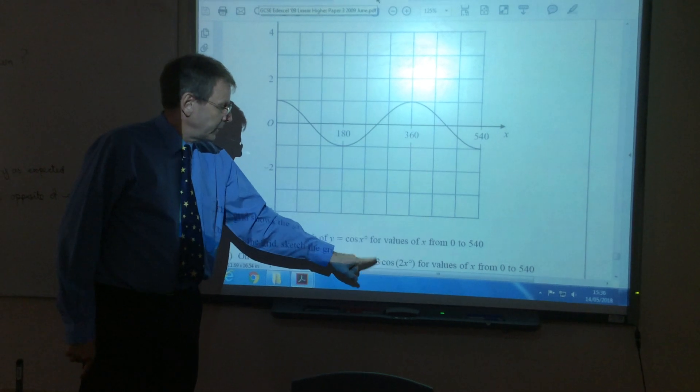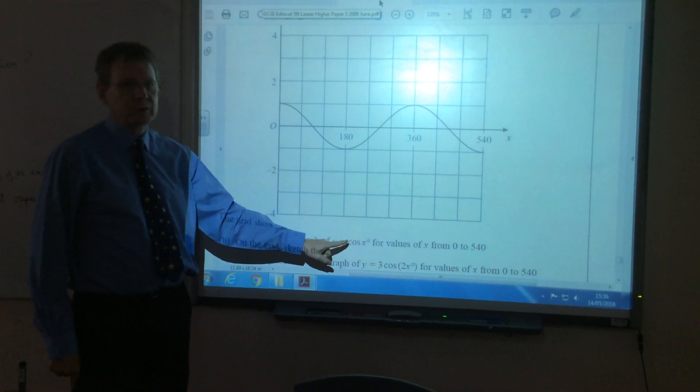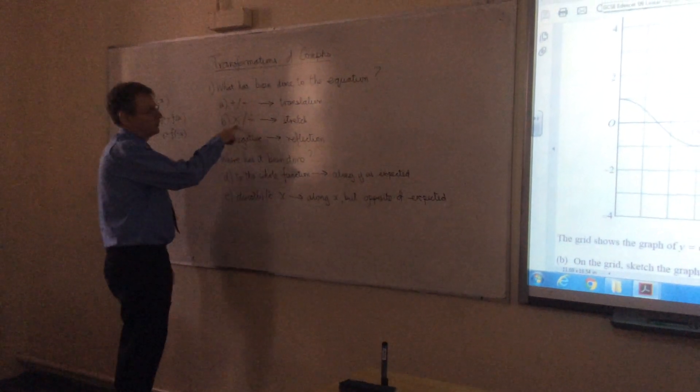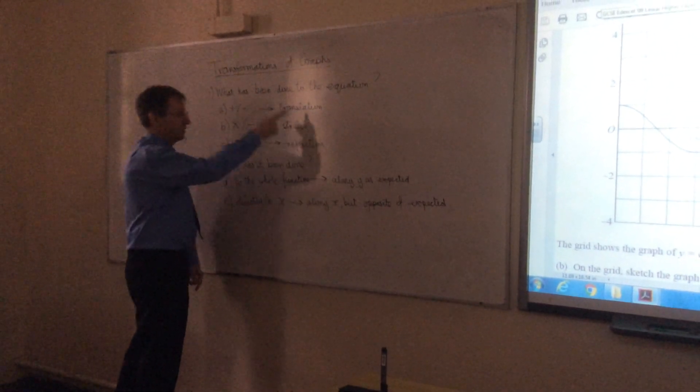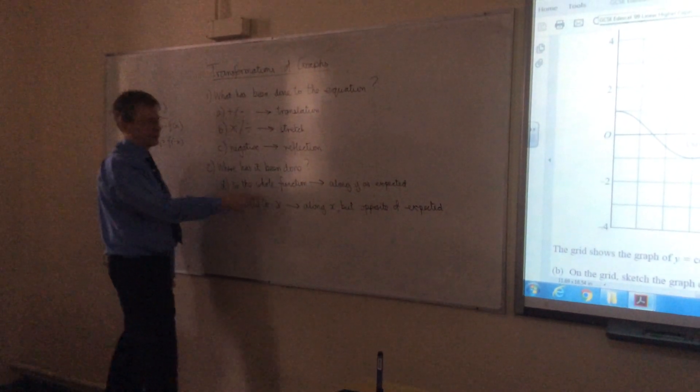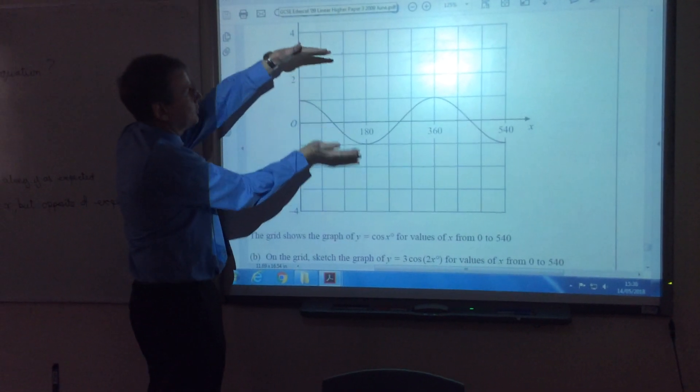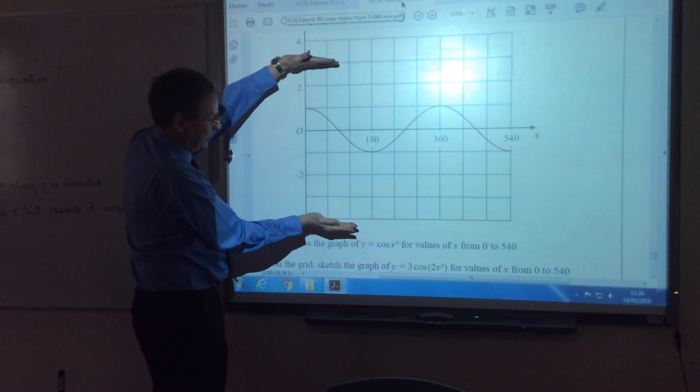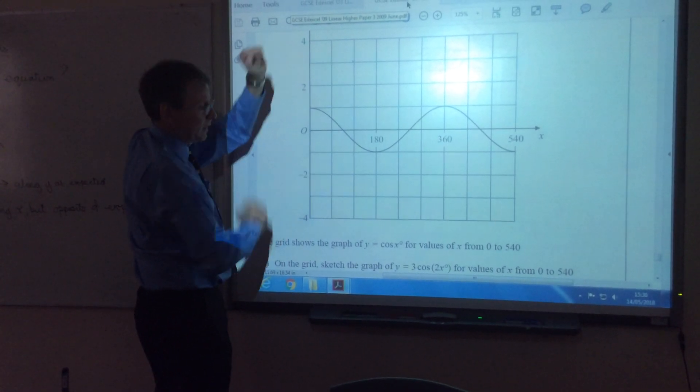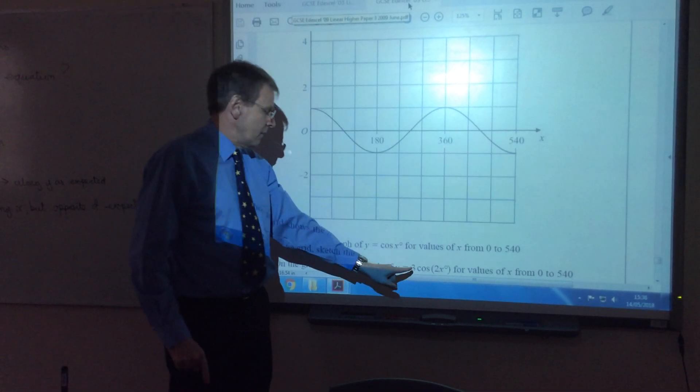Now, the 3 is multiplying the whole of cos x. So if we come back to here, first of all, it's multiplying, so it's a stretch. Secondly, it's being done to the whole function, so it's along y. So this is simply a stretch factor 3 along y. So it's basically going to do that. It's going to go up to 3, and it's going to go down to negative 3.